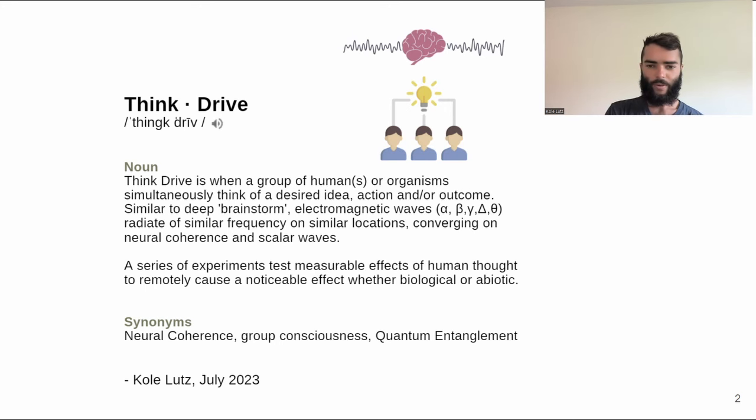It would be really interesting to see how a series of experiments could test measurable effects of human thought to remotely cause a noticeable effect, whether biological or abiotic. This converges on these synonyms of group consciousness, quantum entanglement, and neural coherence.